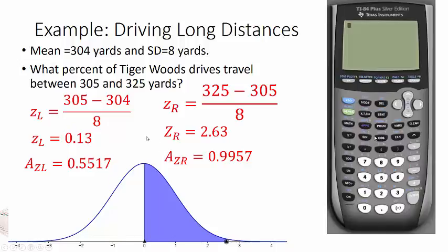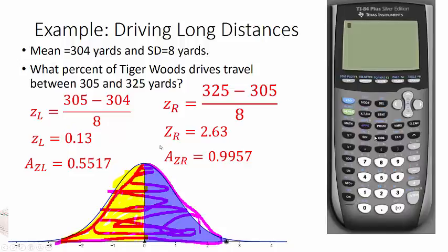So how do I put these two pieces together? Well, the 0.5517 is the yellow area, and the 0.9957 is this whole area right here. Well, if I subtract the pink minus the yellow, that will give me the blue area, which is basically 0.4440.